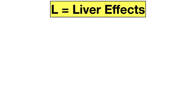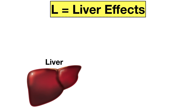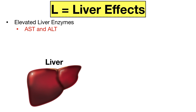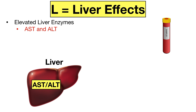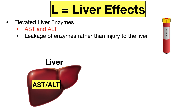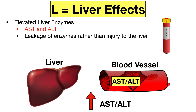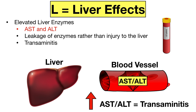The first side effect using the Lipitor mnemonic is the L, which stands for liver effects. Statins can cause side effects to the liver, the most common being elevated liver enzymes, which can be measured on a blood test. The main liver enzymes affected are AST and ALT, which is why your provider may run a blood test to check these levels before starting a statin and periodically thereafter. AST and ALT are enzymes normally found in the liver that help with its function. The elevation is thought to be due to leakage of the enzymes into the bloodstream rather than actual liver damage, though in rare cases statins can cause inflammation or injury to the liver. This elevation of AST and ALT — called transaminases — is referred to as transaminitis.